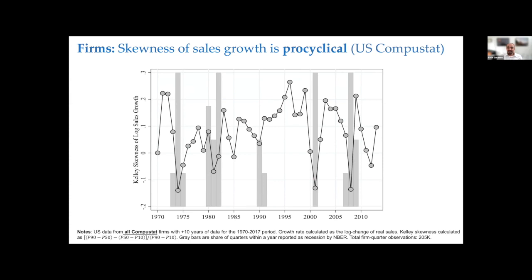That's why all the results I'm going to show today are very non-parametric. Once you have the non-parametric results and realize skewness really fluctuates, you can go back and write parametric models that allow skewness to fluctuate. When you do that, you get the correct results: you find a flat variance and pro-cyclical skewness over time.